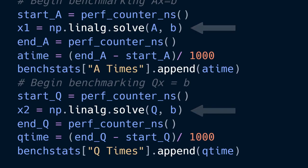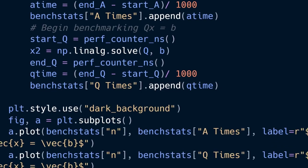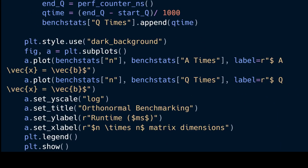Also note we're using the nanosecond perf counter in Python, we are converting all of those times to milliseconds, and we're recording those times to solve each system, both the system containing the randomly generated A matrix and then also the one containing the orthonormal matrix. And then note here in the plotting that we are plotting our dimensions compared to the runtime and that runtime is again in milliseconds and that y-axis is on a logarithmic timescale.